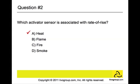The answer is heat. When a predetermined temperature is reached, a heat activated sensor is triggered. Also, the sensor is triggered when the temperature rises quickly. The rate of rise type of sensor produces more false positives.